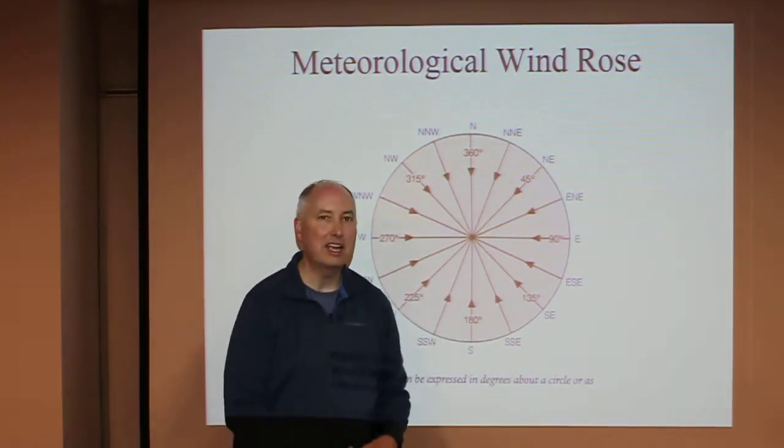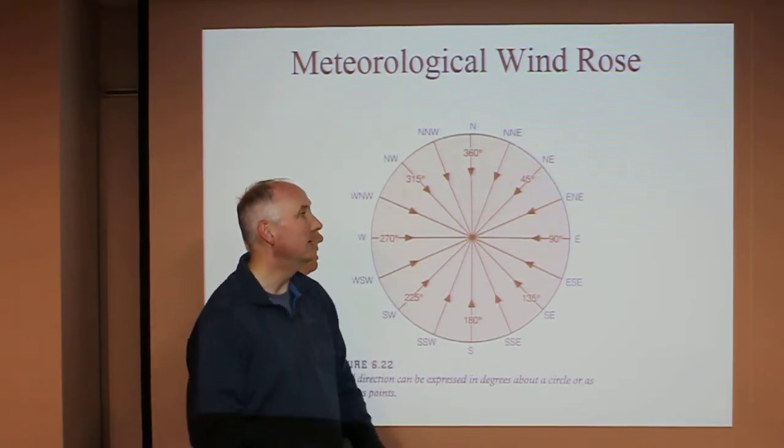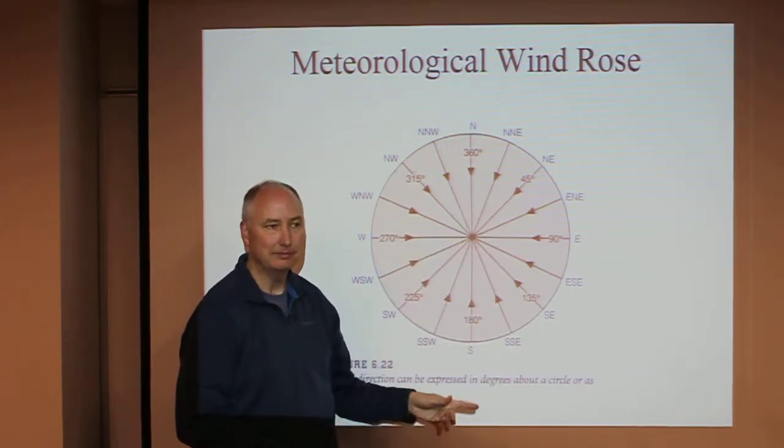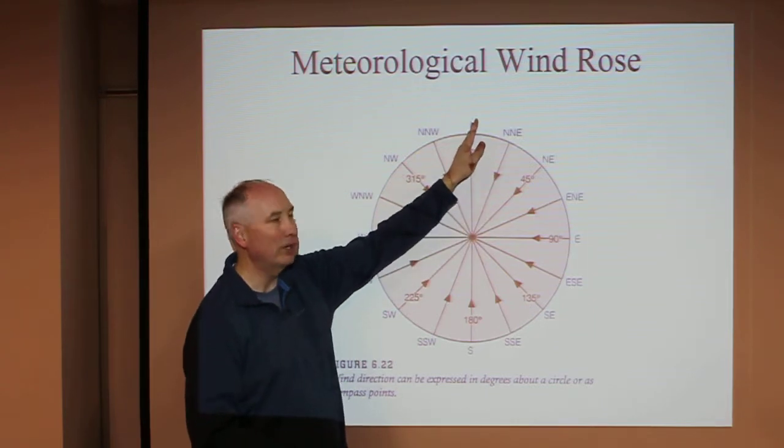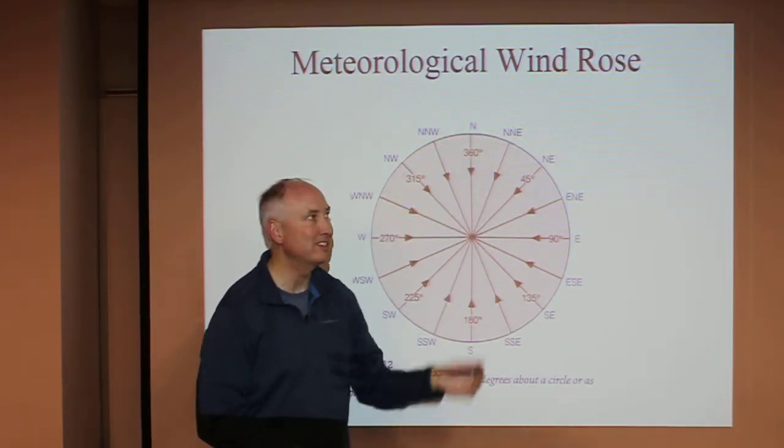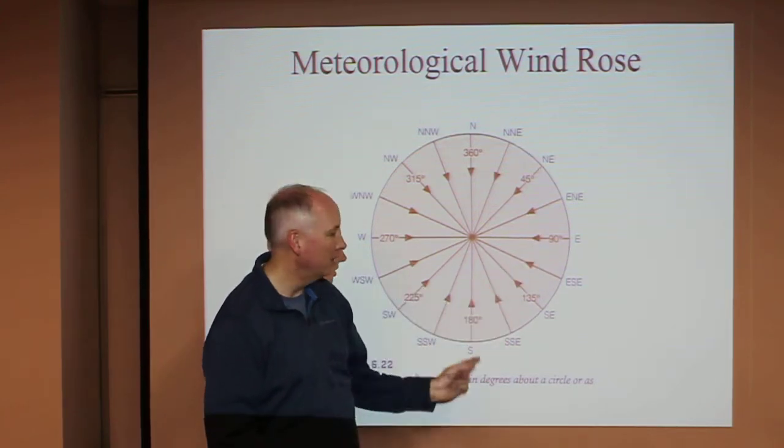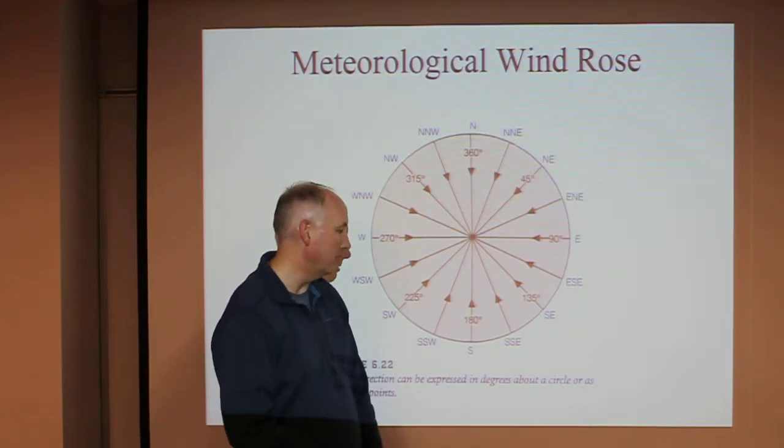We also put a numerical degree to describe that wind. Unlike a mathematical diagram, if the wind is coming from the north, we refer to it as zero degrees. If it's coming from the east, it's 90 degrees, 180 degrees from the south, and 270 degrees from the west.